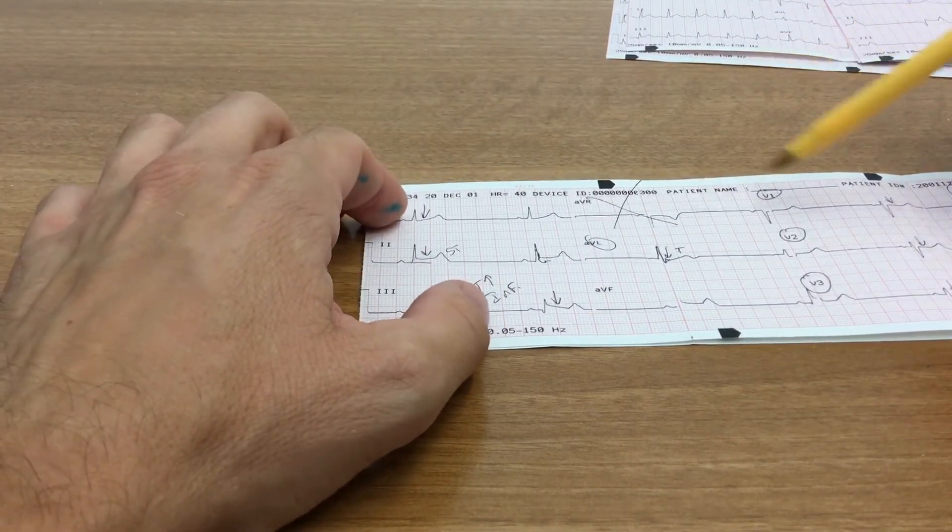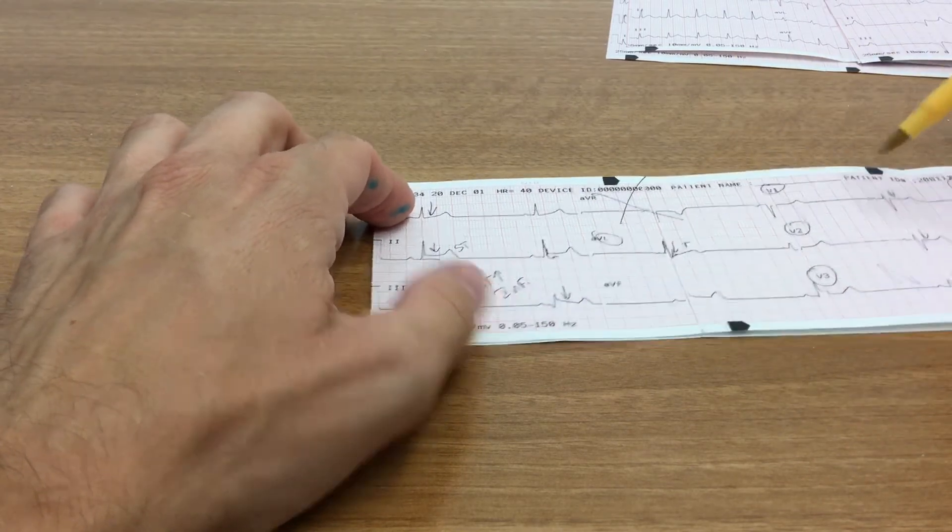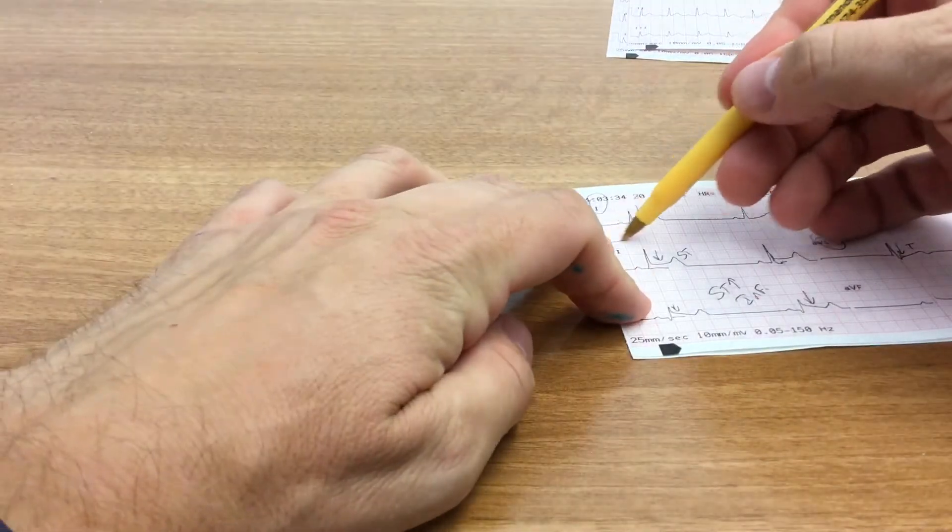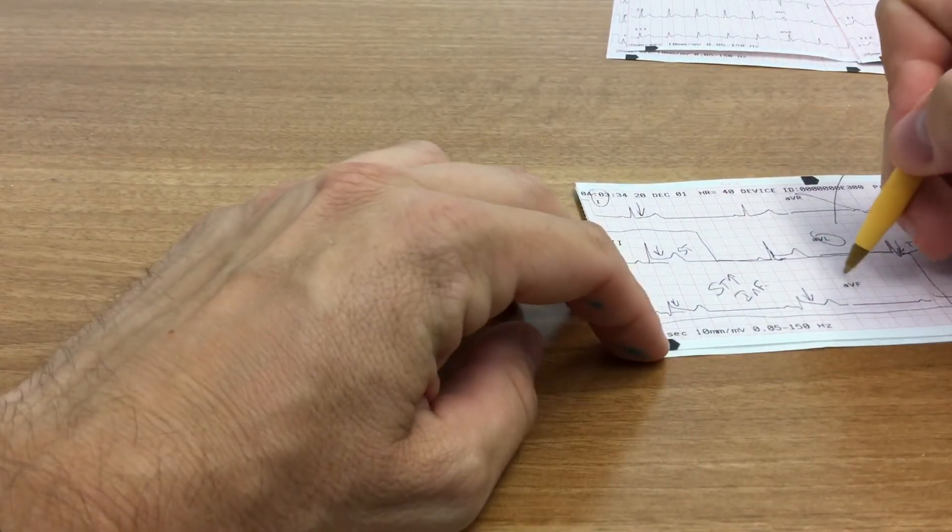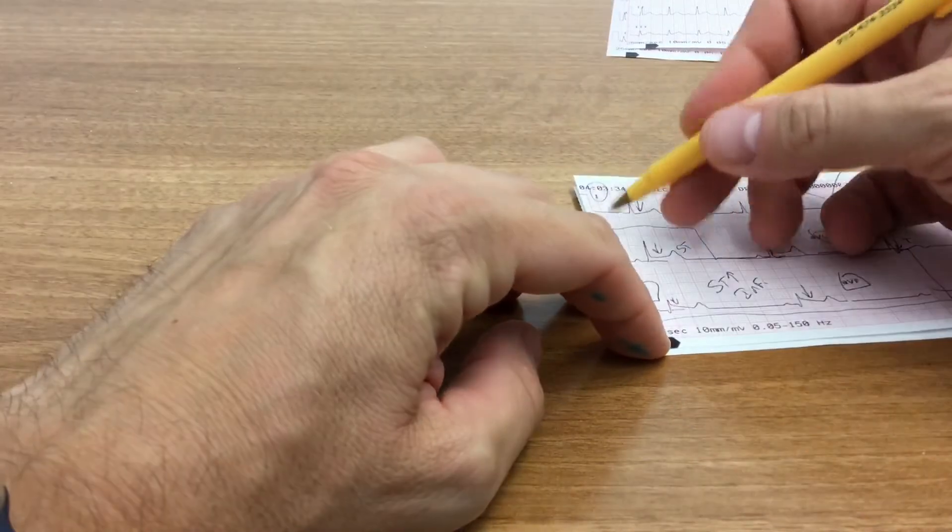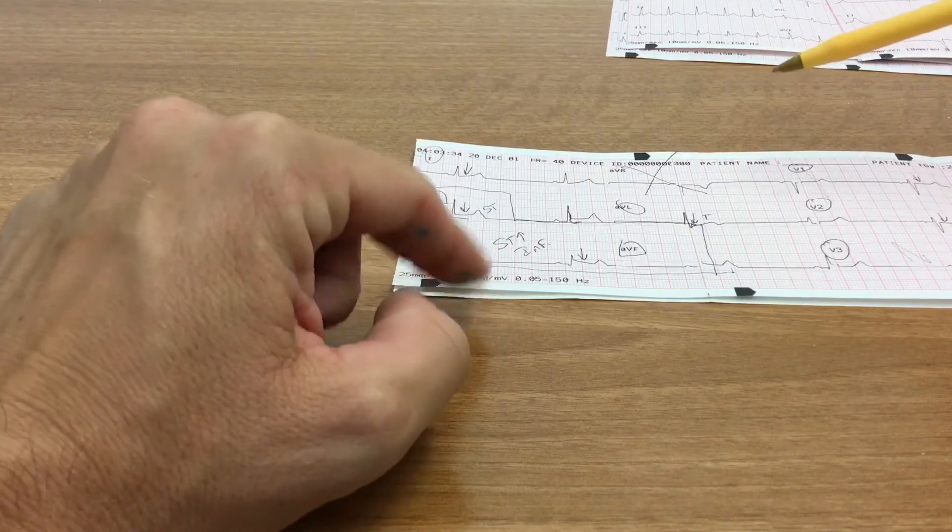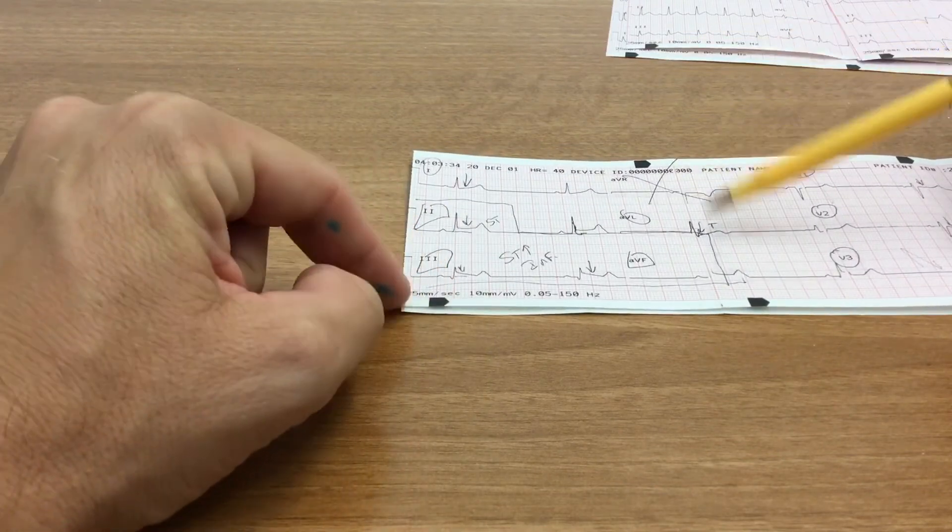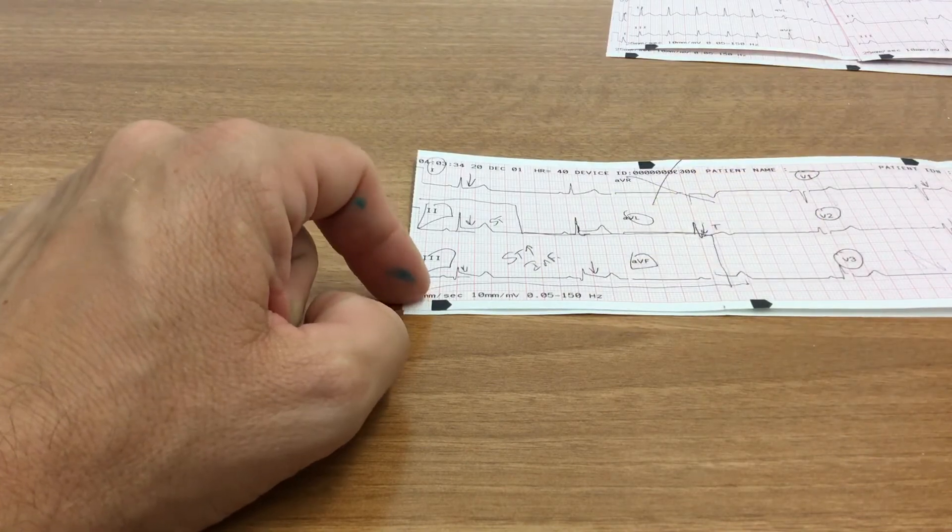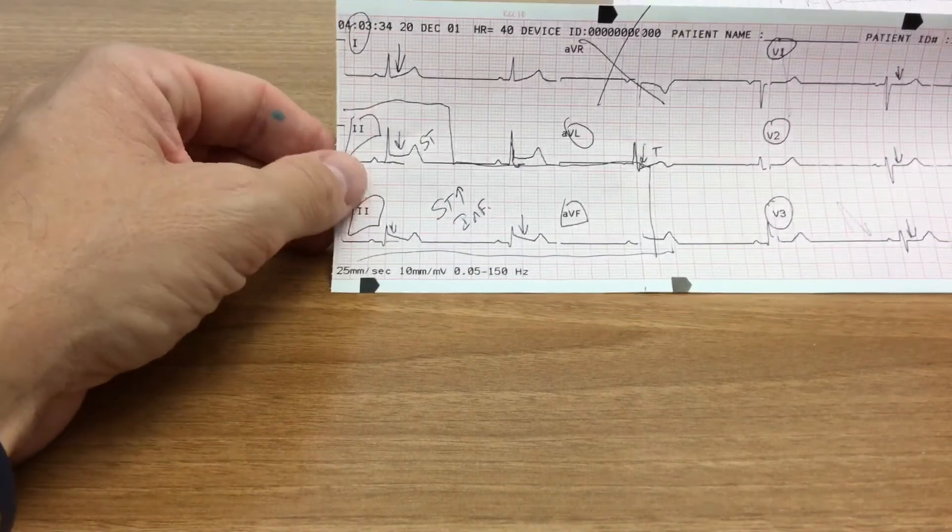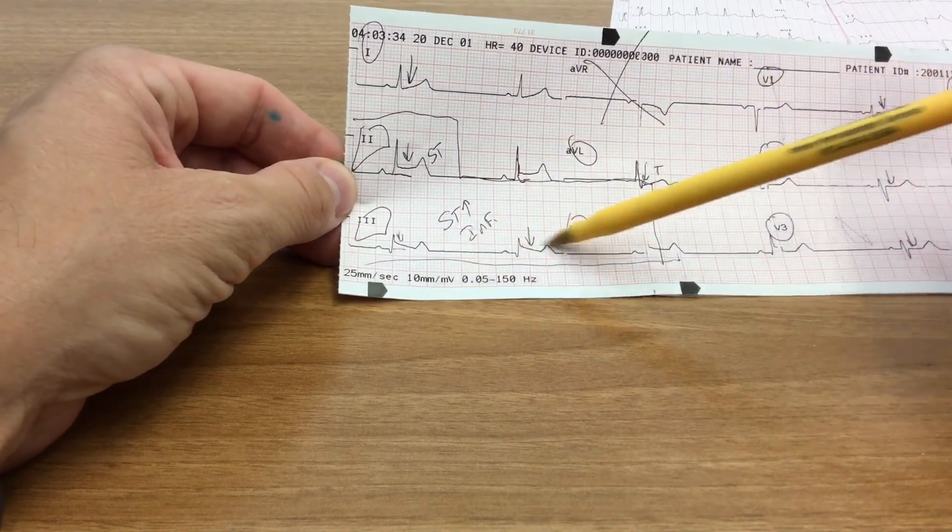So the anterior, septal, and lateral walls look okay. But we do have ST segment elevation in all three of my inferior leads. And so we would say, in this case, if our patient had signs and symptoms suggesting a STEMI or suggesting acute coronary syndrome, and we marry that with these findings, this is a very high probability that this patient is having a ST elevation myocardial infarction in the inferior wall.